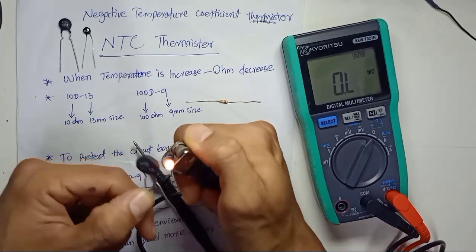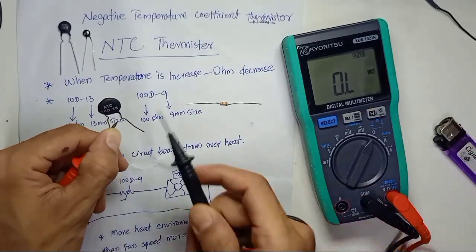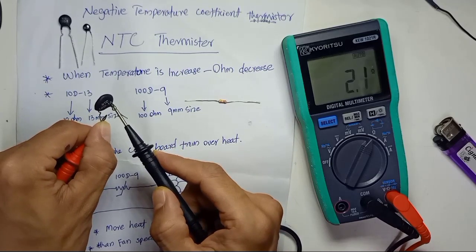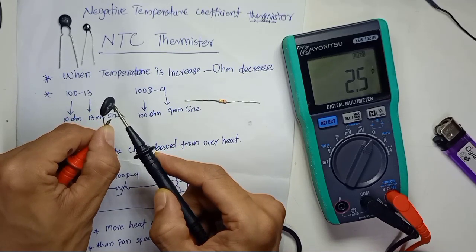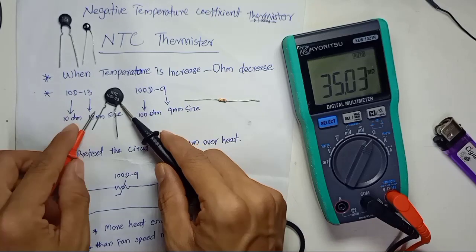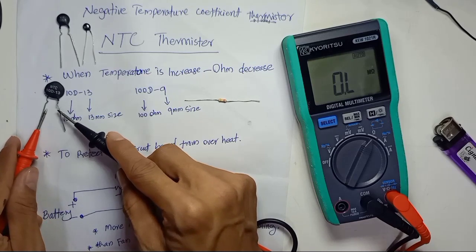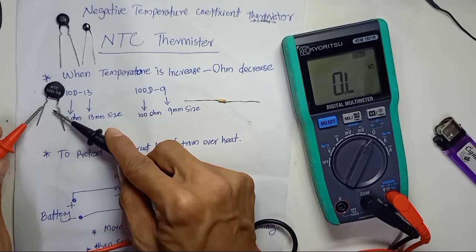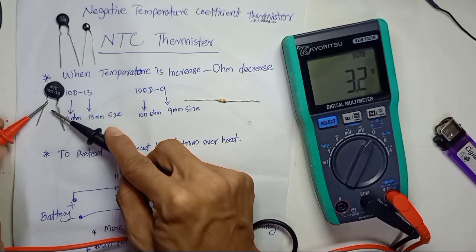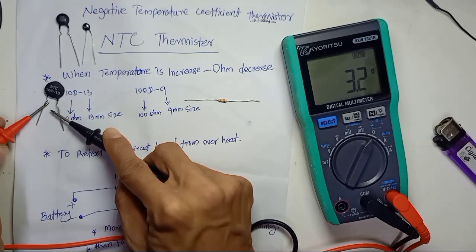The larger size thermistor will resist heat more. After applying heat we get only 2.6 ohms — down from around 6-7 ohms at room temperature. Now as it cools back down the ohm is already increasing back, because the thermistor is getting cold again.